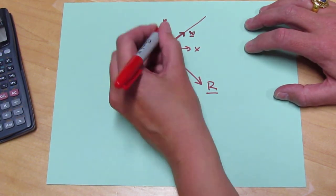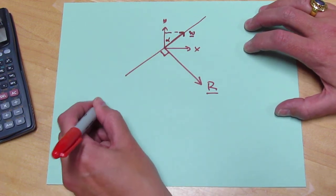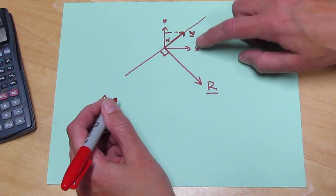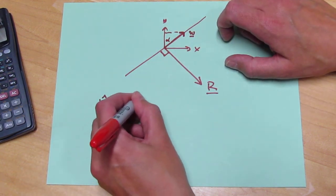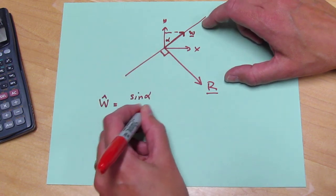All right, so this is alpha, and so I can decompose W, and I get that W, a unit vector, is equal to, it's got an X component, which is sine alpha. It has a Y component, which is cosine alpha, zero.